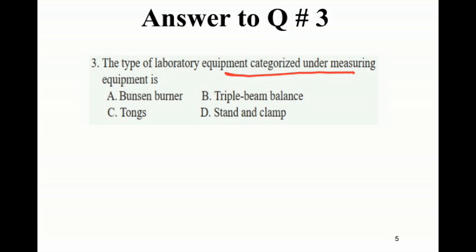The beam balance is used to obtain the mass of an object. The Bunsen burner is used for heating contents. Tongs are for transporting, for removing the lid from the crucible.